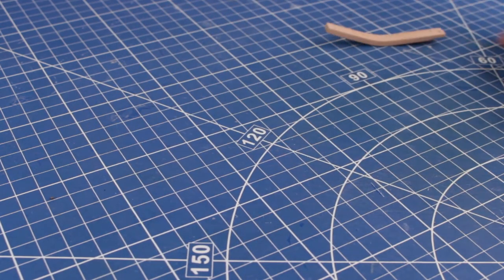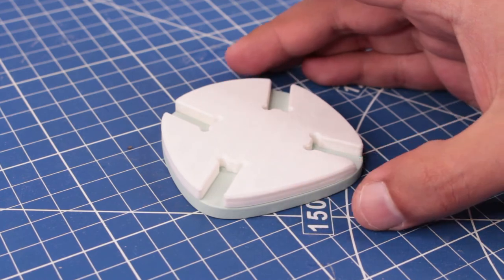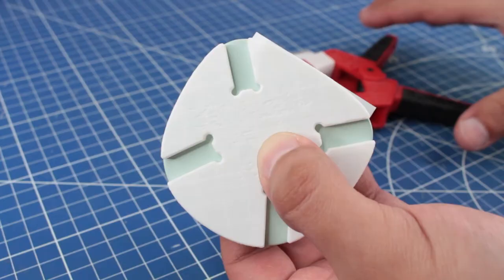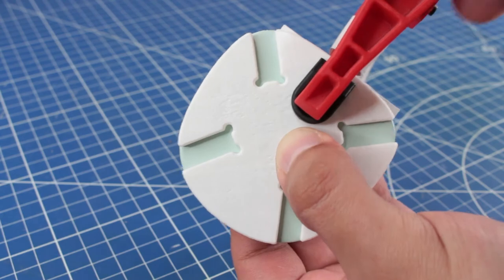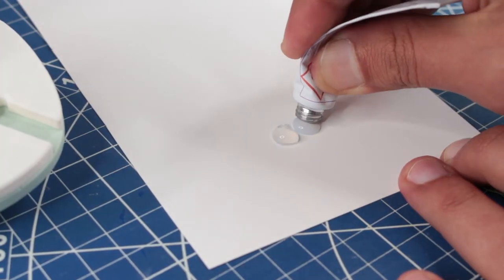And now the final assembly. So I am using this 3D printed pattern to place each leg on the right place. This is part A and part B epoxy glue.